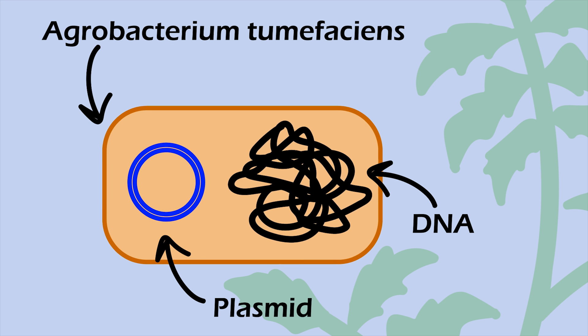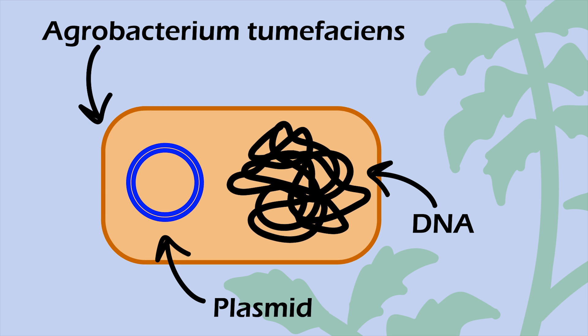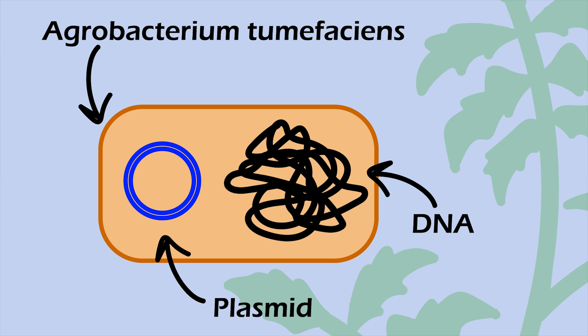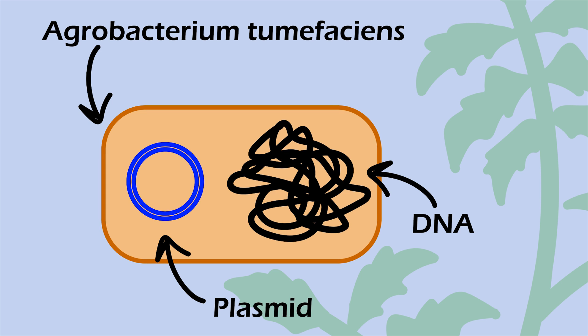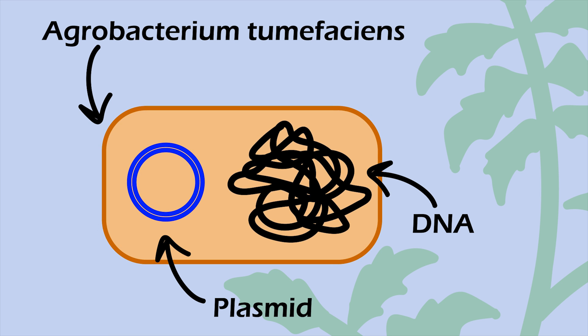Agrobacterium tumefaciens is a bacterium that naturally infects plants and uses the plant's cells to express its DNA. Researchers can use this process to insert a gene they are studying into the plant and examine the transient expression of the gene within a cell.